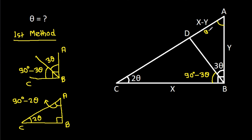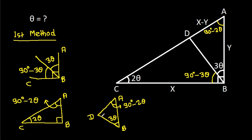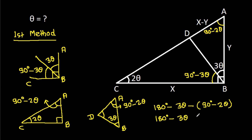So this angle will be 90 degrees minus 2 theta. And therefore this angle will be 180 degrees minus 3 theta. So this angle will be 90 degrees minus 2 theta.